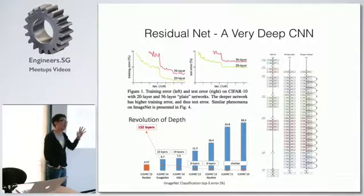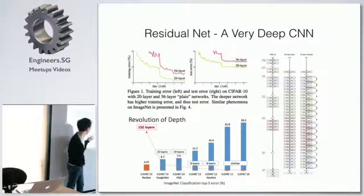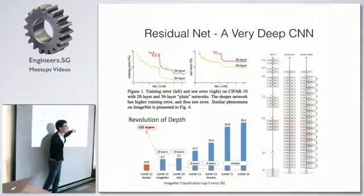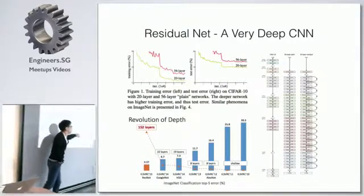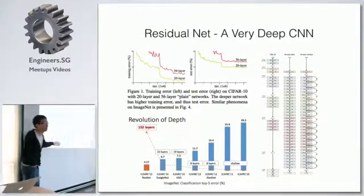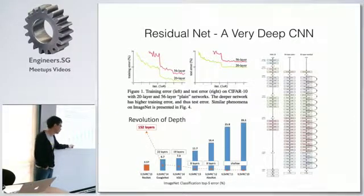Then they can change from an 8 layer or 19 layer, now they can train like a 152 layer neural network. And then this one achieved last year in the same competition the first place and its performance on this competition is...